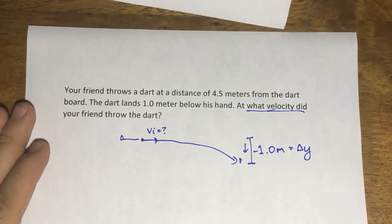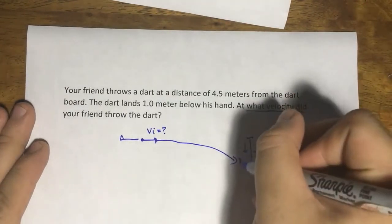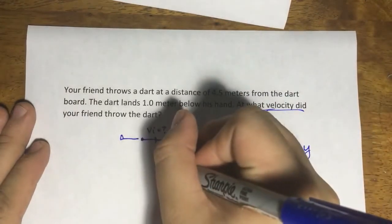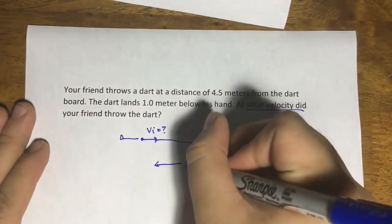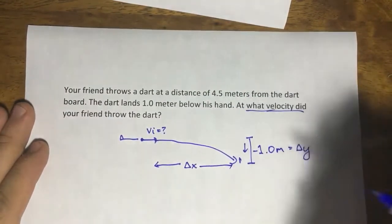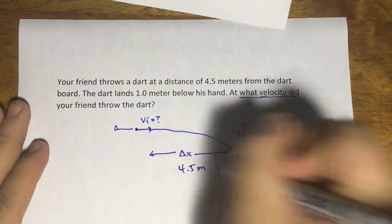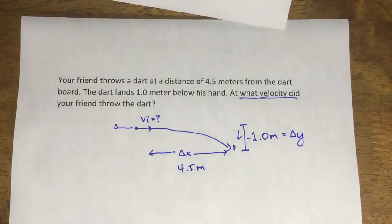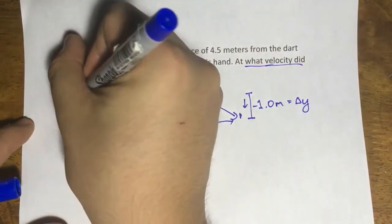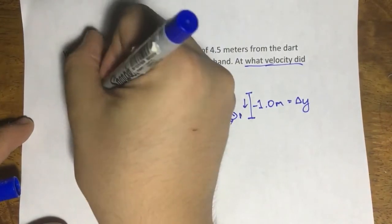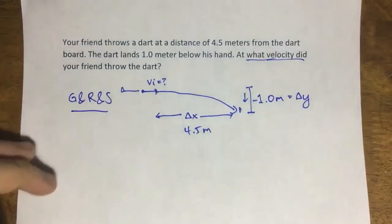And he threw the dart at a distance of 4.5 meters from the dartboard. So this is the dartboard. He was some distance from the dartboard. This is your x direction, and therefore the distance is 4.5 meters. This is your given and required and sketch all together into one thing.